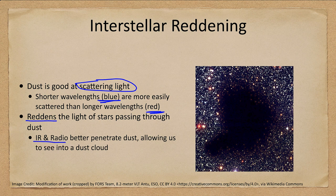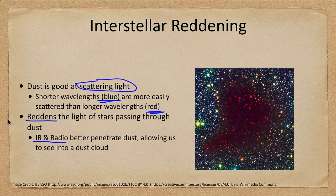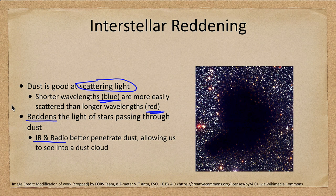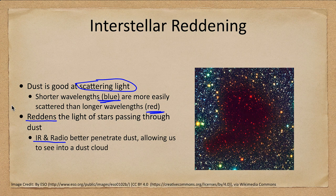Infrared and radio can penetrate the dust. If we look at this same nebula in the infrared, we can see all of those stars that were previously hidden. In visible light they are obscured, but in infrared light — which is longer wavelength and not well scattered — it easily passes through the dust cloud, allowing us to see the material there.